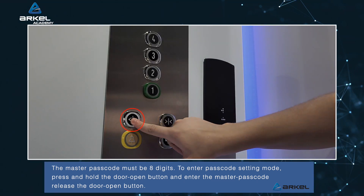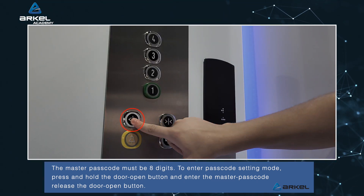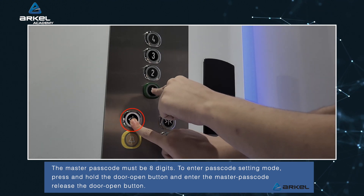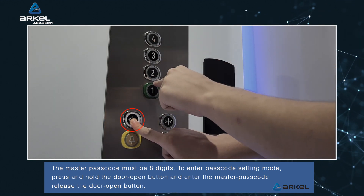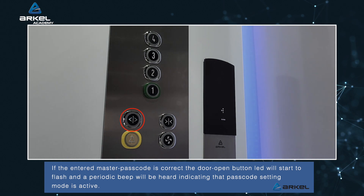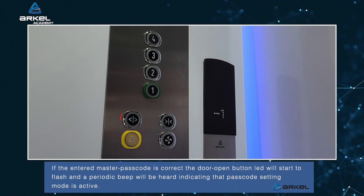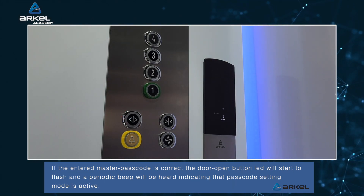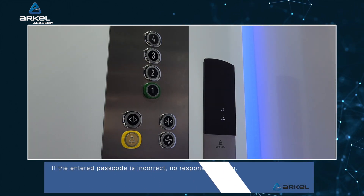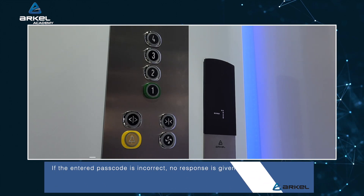To enter passcode setting mode, press and hold the door open button and enter the master passcode. Release the door open button. If the entered master passcode is correct, the door open button LED will start to flash and a periodic beep will be heard, indicating that passcode setting mode is active. If the entered passcode is incorrect, no response is given.